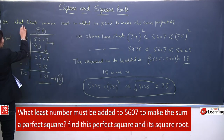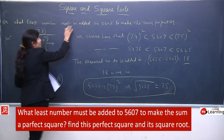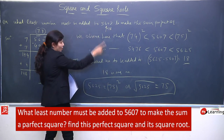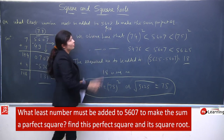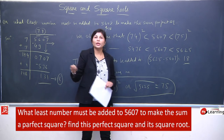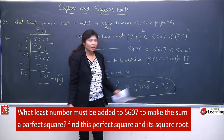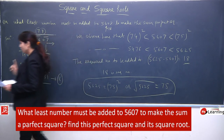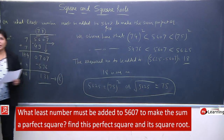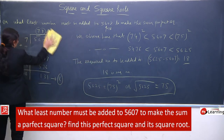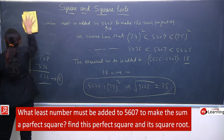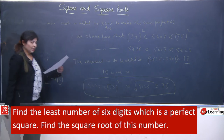They have asked what least number must be added to this — toh humne 18 add kiya, so it will become 5625. Uska perfect square find karaye — woh bhi dikha diya. Added wale question equally important hain jaise subtracted wale. Inko bahut practice karaye kyunki ye exam mein 99 percent aate hi hain.